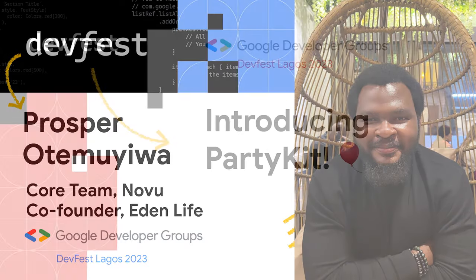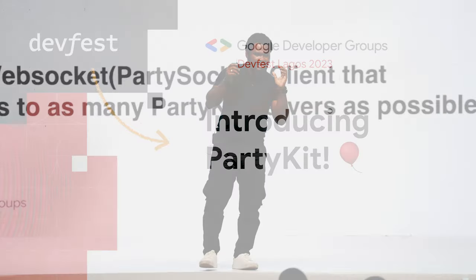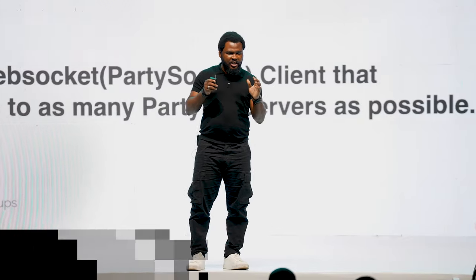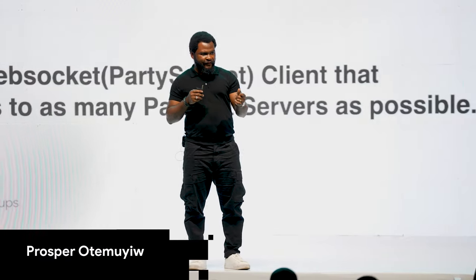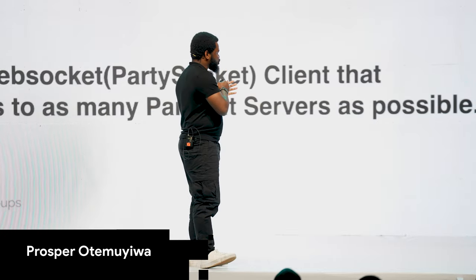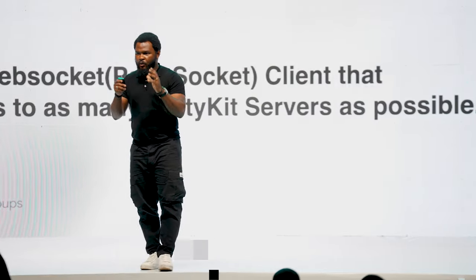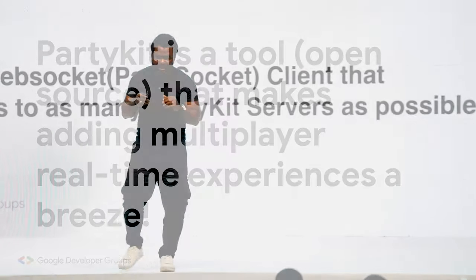PartyKit is an open source tool built in JavaScript and Node that you can use to build multiplayer real-time applications very fast. I'm going to go through how easy it is for you to build with PartyKit.